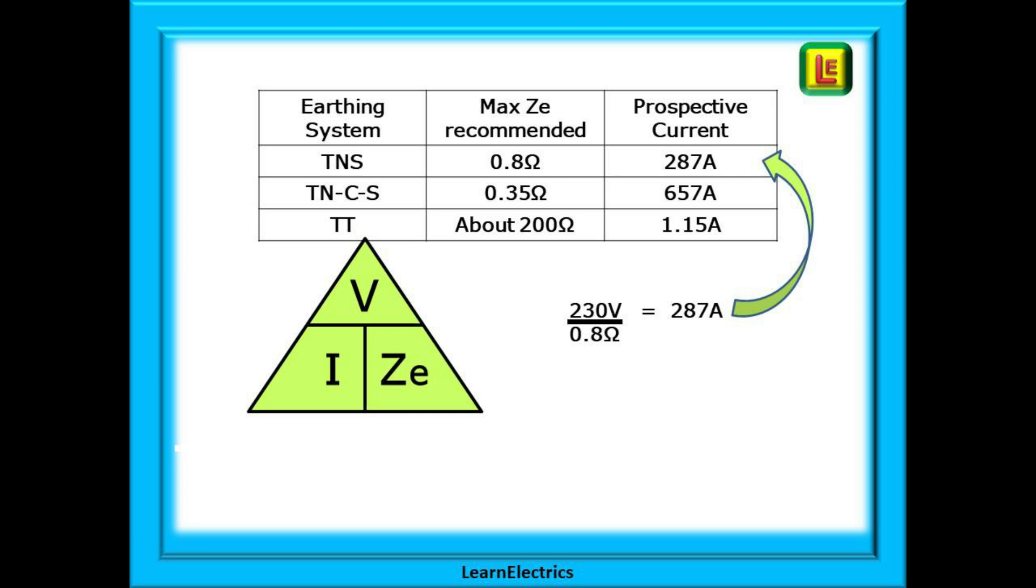Each earthing system has a maximum recommended impedance for ZE, the outside part of the installation. For a TNS system this is 0.8 ohms. Using the ohms law triangle, 230 volts divided by 0.8 ohms gives us a maximum fault current of 287 amps. For a more modern TNCS system the maximum ZE is just 0.35 ohms. Doing the calculation again, up to 657 amps might flow during a fault on a TNCS system. With the TT system things are very different. A TT system can have a ZE of up to 200 ohms and this will only yield a fault current of 1.15 amps in this case. Of course ZE numbers could be lower in all scenarios but we are quoting here the maximum figures suggested to be within normal expectations.